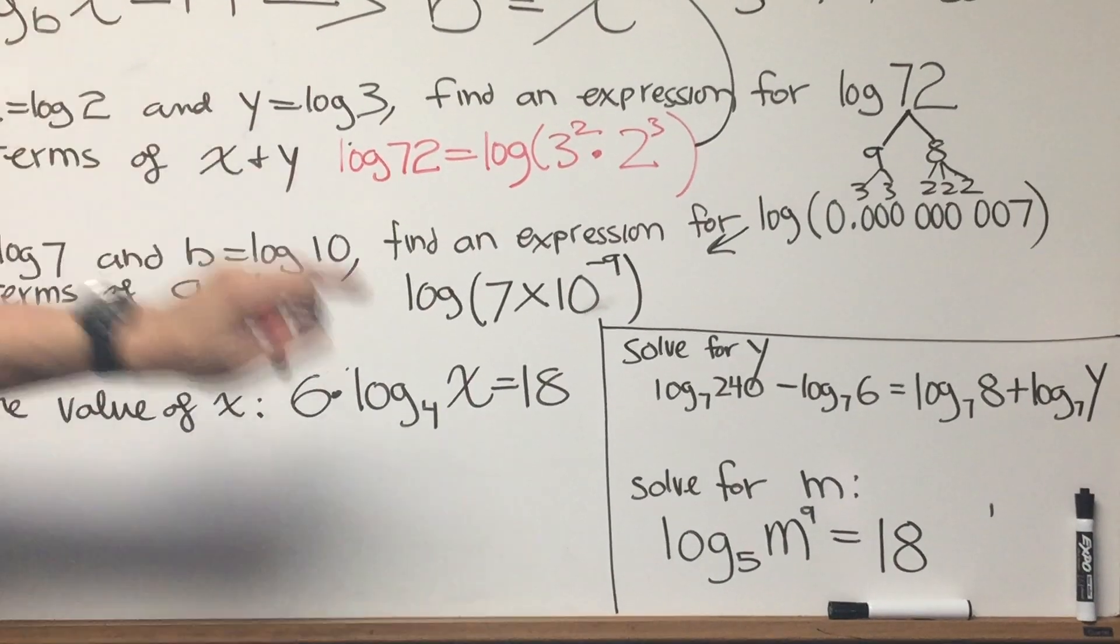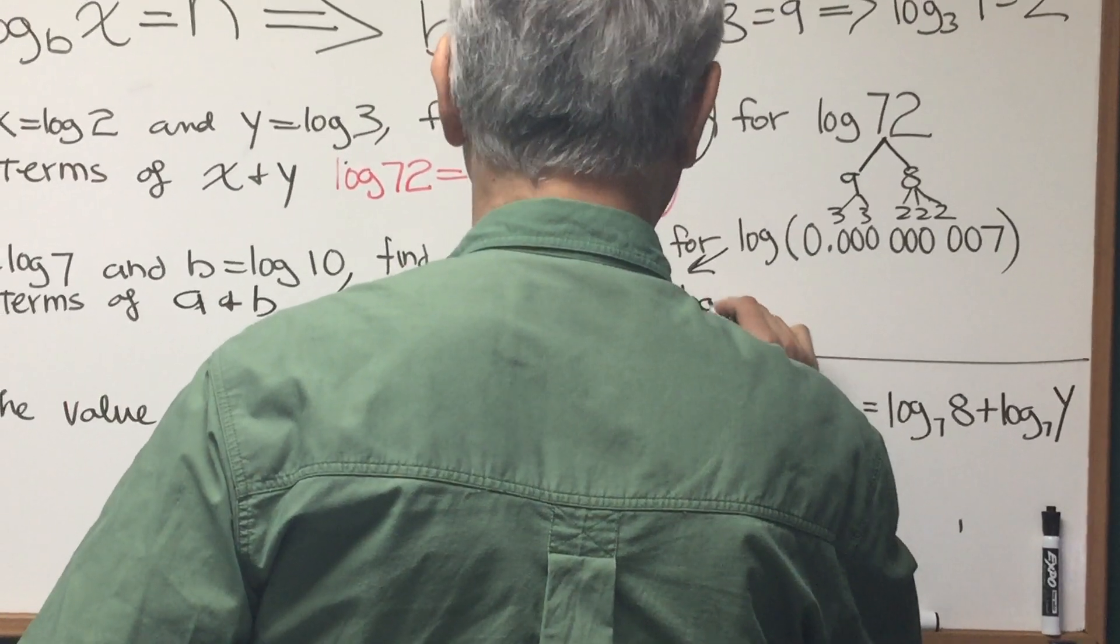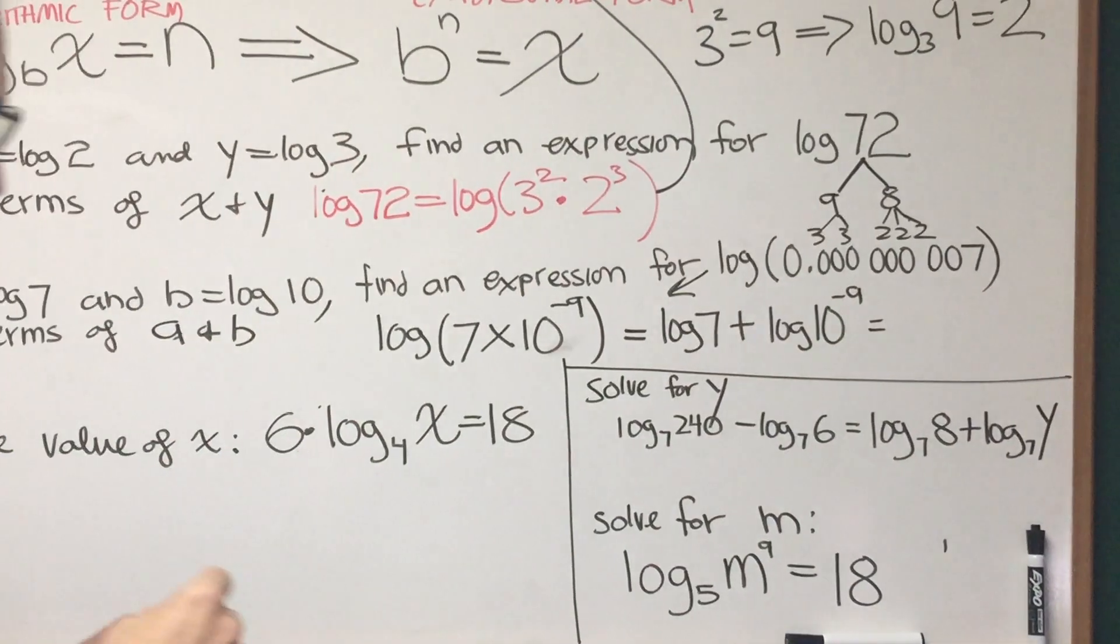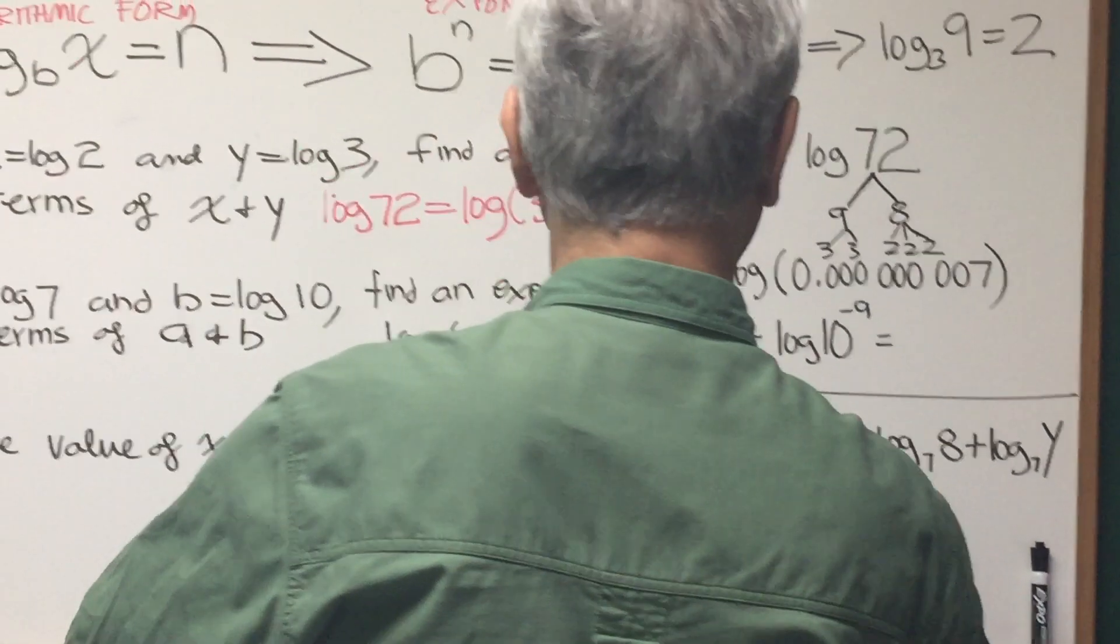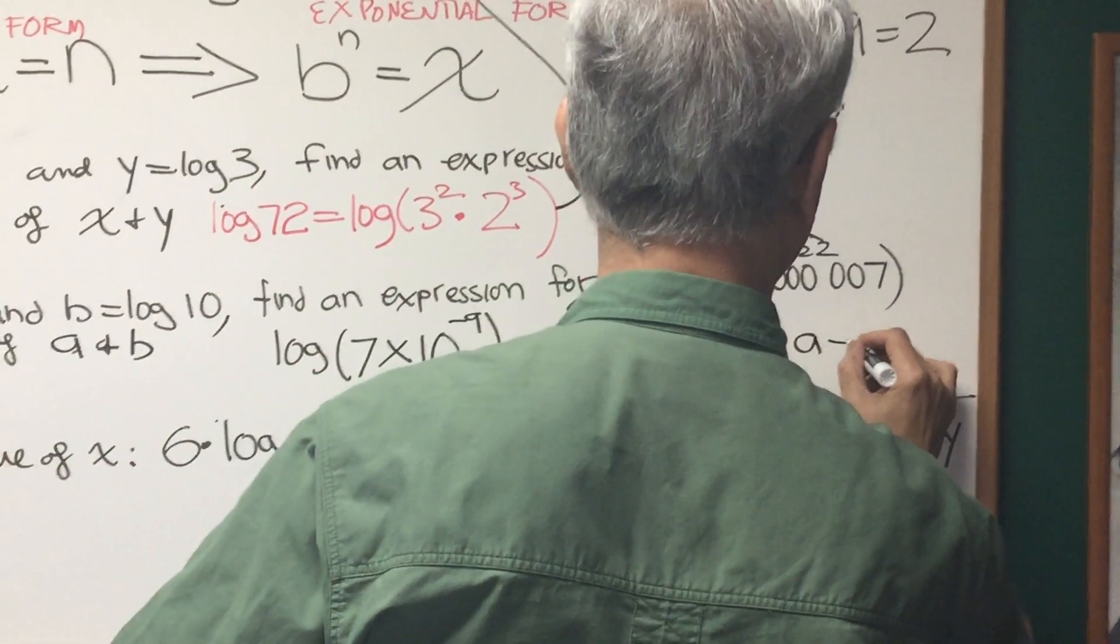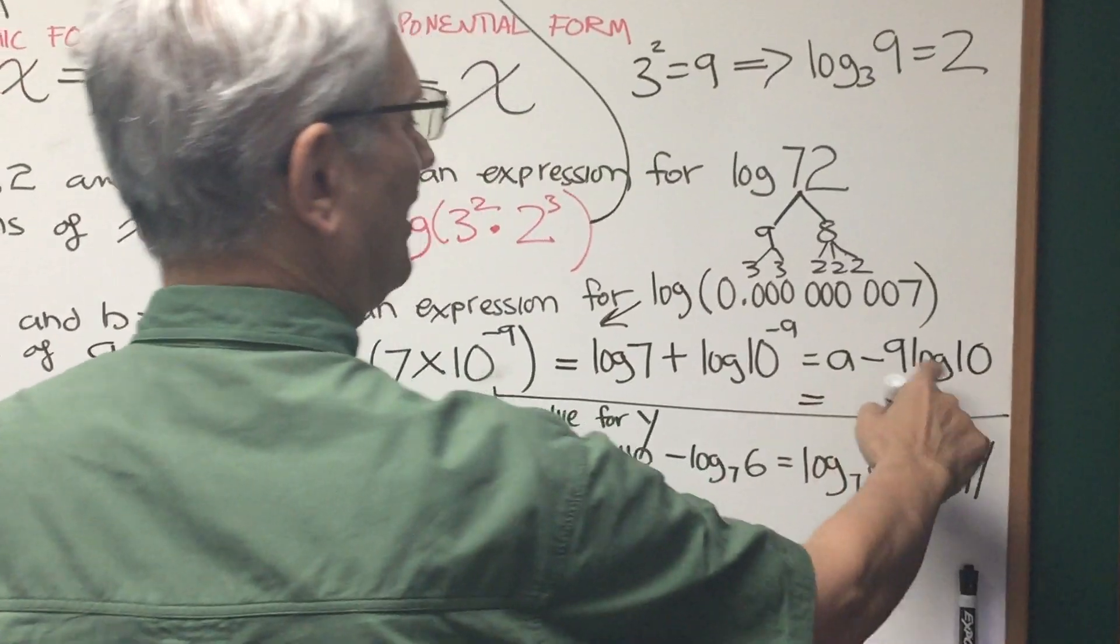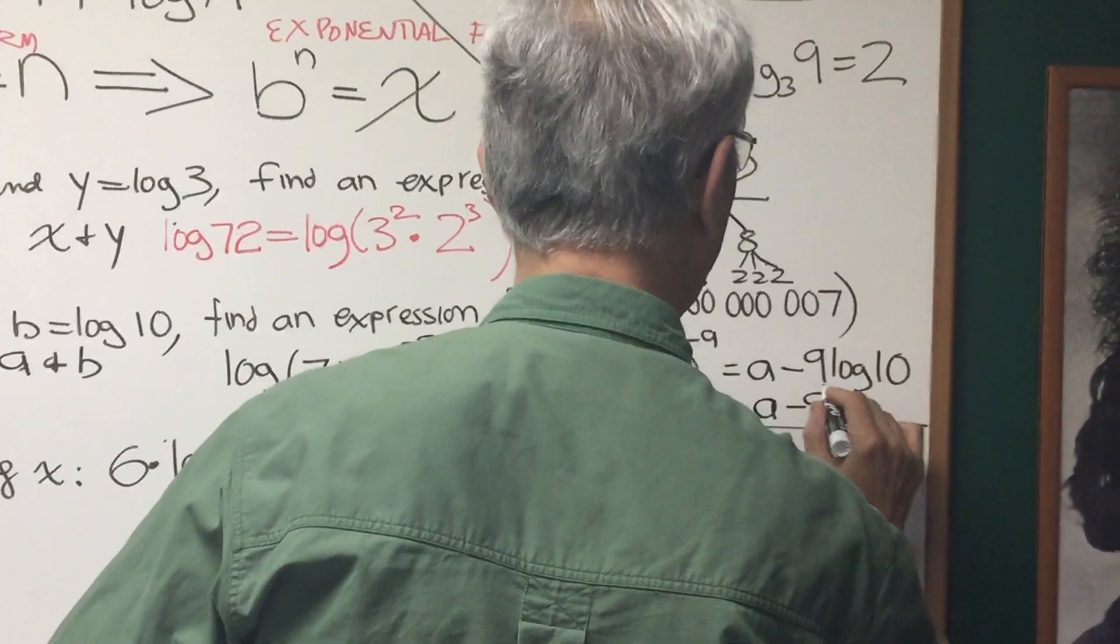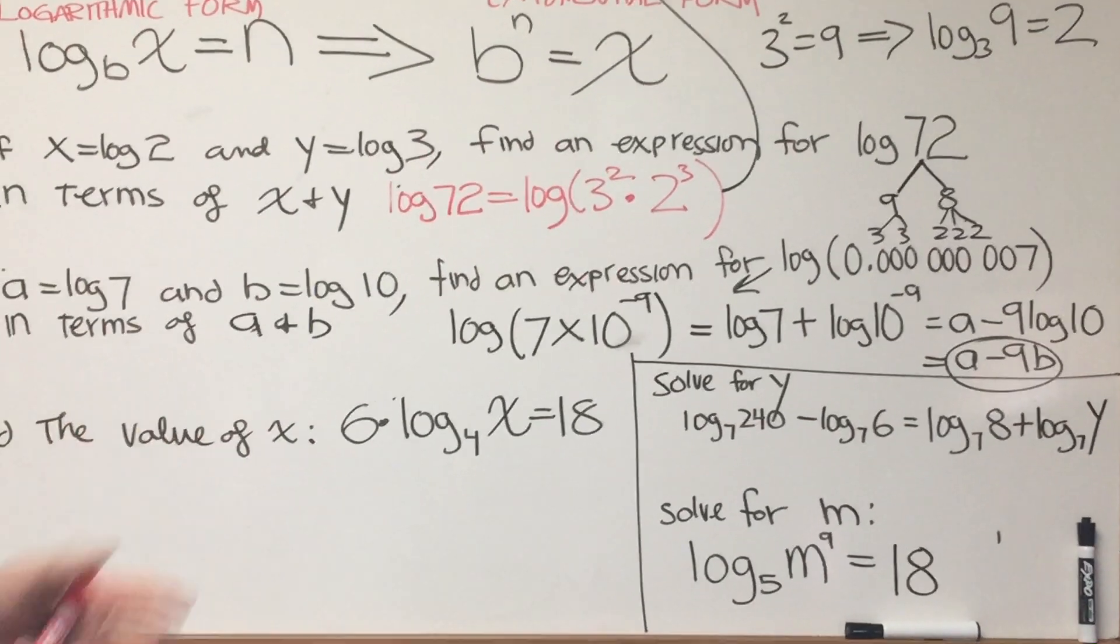Let's again use our law of logarithms. The log of a product is the sum of the logs of the individual factors. So we have log of 7 plus log of 10 to the minus 9. That is going to give us log of 7, we know is equal to a. And the second expression, I can bring the negative 9 down as a coefficient. It's negative 9 times the log of 10. We know the log of 10 is equal to b, so the answer here is a minus 9b. And there is the value of our expression.